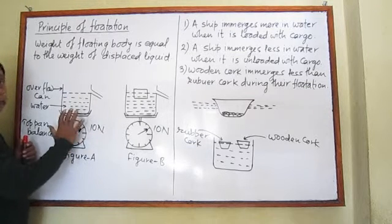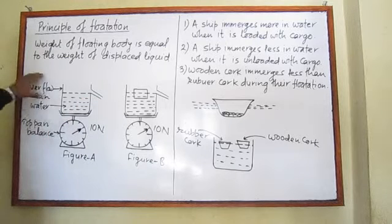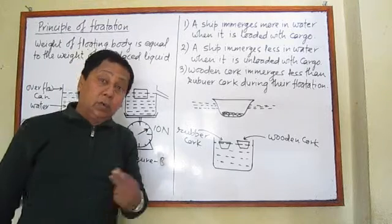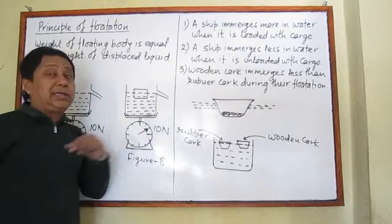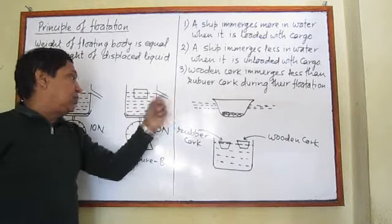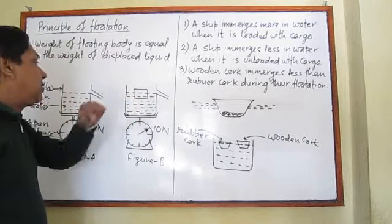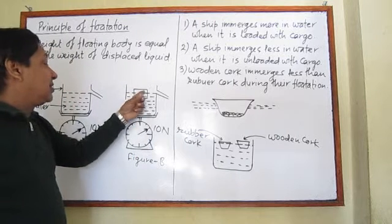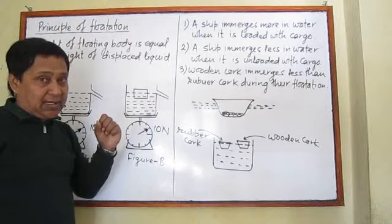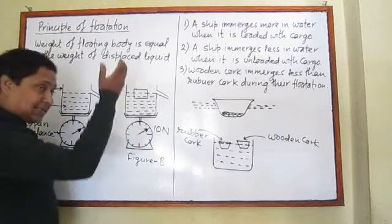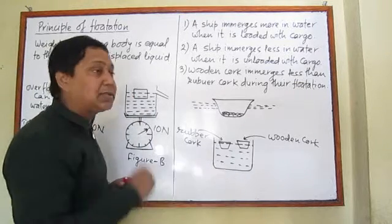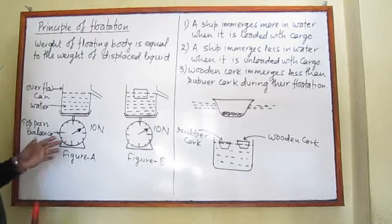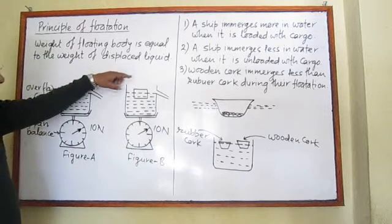When a piece of wood is placed in the overflow can — and we know that wood floats on water — the combined weight is again found to be ten Newton. The weight should now include the overflow can, water, and the wood, but the wood's weight seems missing. The reason is simple: it displaces a certain amount of water out of the overflow can. Since the total weight remains ten Newton, the weight of the wooden piece must equal the weight of the water displaced. This proves that the weight of a floating body is always equal to the weight of the displaced liquid.